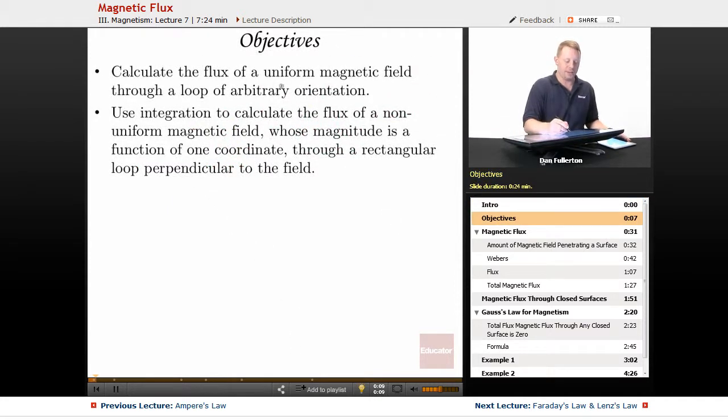Our objectives include calculating the flux of a uniform magnetic field through a loop of arbitrary orientation and using integration to calculate the flux of a non-uniform magnetic field whose magnitude is a function of one coordinate through a rectangular loop perpendicular to the field. Sounds complicated, but when you see the setup and the example problem it'll be nice and straightforward.